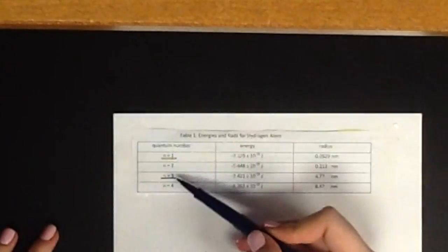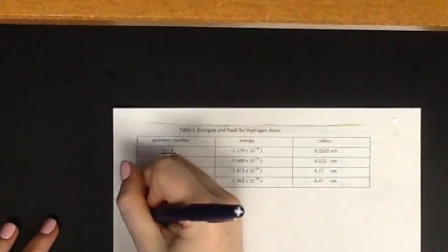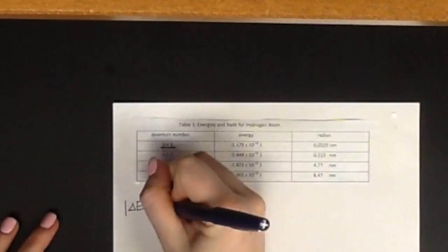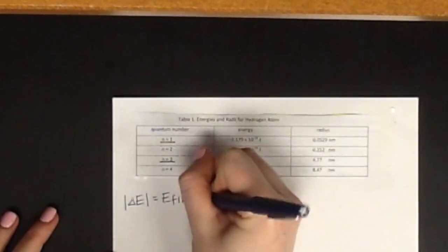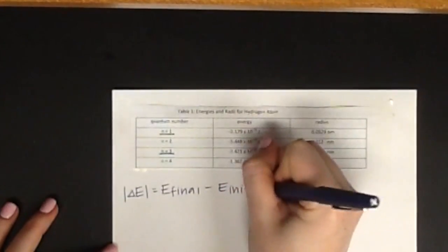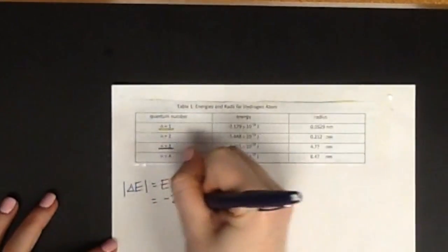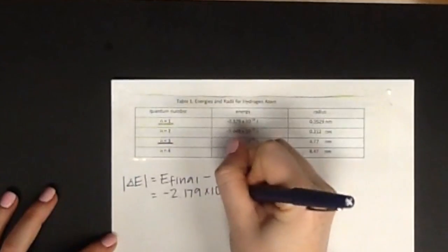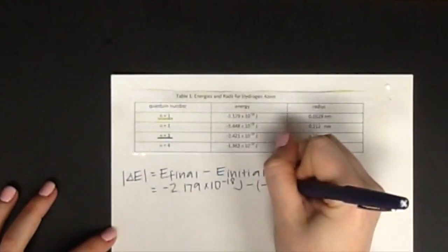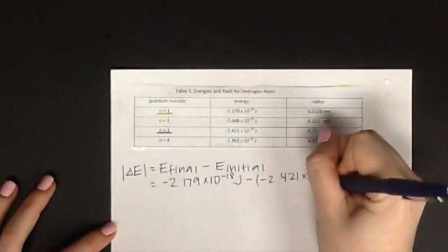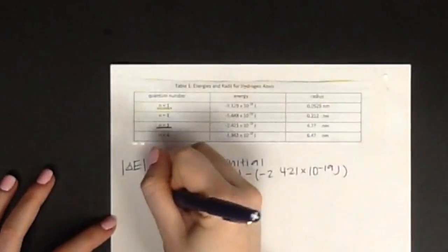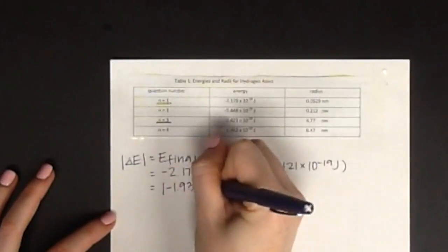Let's start this problem by using the change in energy equation. We will use the energy of the final energy state minus the energy of the initial energy state. This means we will take the energy from the n equals 1 level and minus it by the energy from the n equals 3 level. When we plug in these numbers, we get 1.937 times 10 to the negative 18 joules.